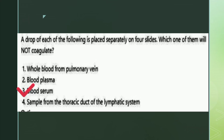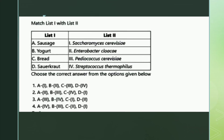The next is a match the following. List one: sausage, yogurt, bread, sauerkraut. List two: Saccharomyces cerevisiae, Enterobacter cloacae, Pediococcus cerevisiae, Streptococcus thermophilus. The right answer is option three: sausage - Pediococcus cerevisiae, yogurt - Streptococcus thermophilus, bread - Saccharomyces cerevisiae, and sauerkraut - Enterobacter cloacae.